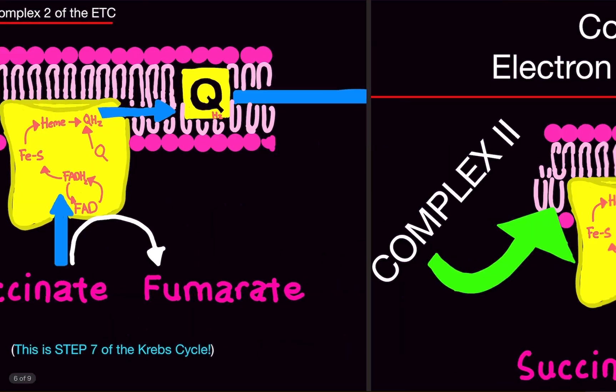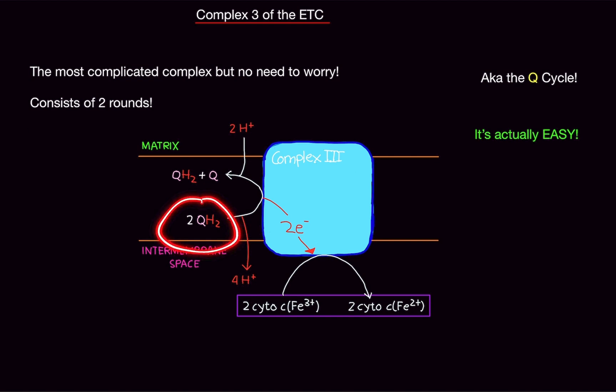So, these two ubiquinol molecules are going to go to Complex 3. And now, the big goal of Complex 3 is to shove protons into the intermembrane space, acting as a proton pump. That is it. And you're going to realize something that it looks a little bit inefficient. And it is. It kind of is inefficient. But the whole goal is to pump protons into the intermembrane space for the ATPase pump we'll get into.